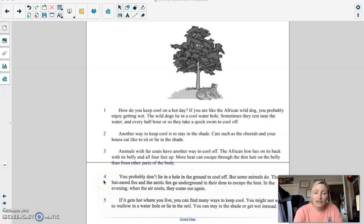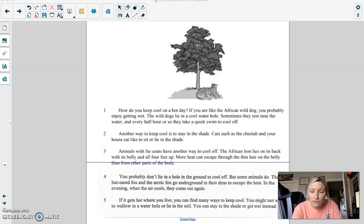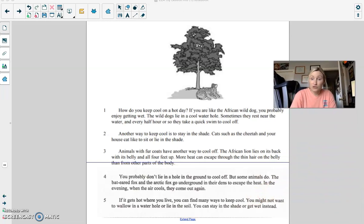You probably don't lie in a hole on the ground to cool off. But some animals do. The bat-eared fox and the arctic fox go underground in their dens to escape the heat. In the evening, when the air cools, they come out again. If it gets hot where you live, you can find many ways to keep cool. You might not want to wallow in the water hole or lie in the soil. You can stay in the shade or get wet instead.